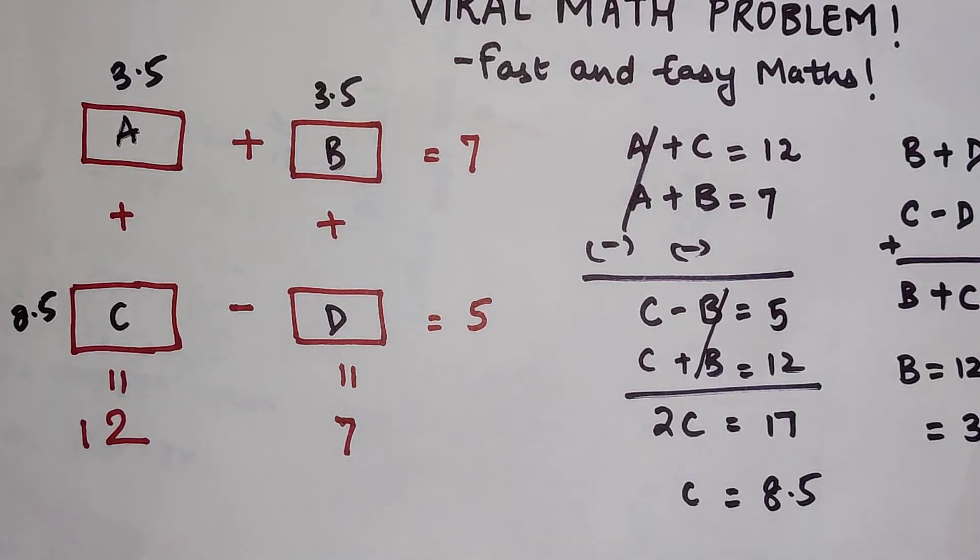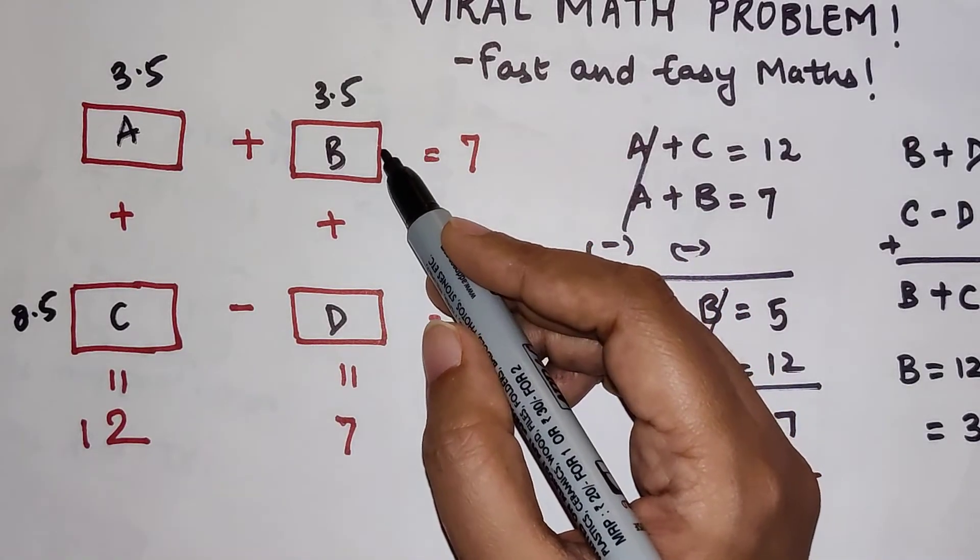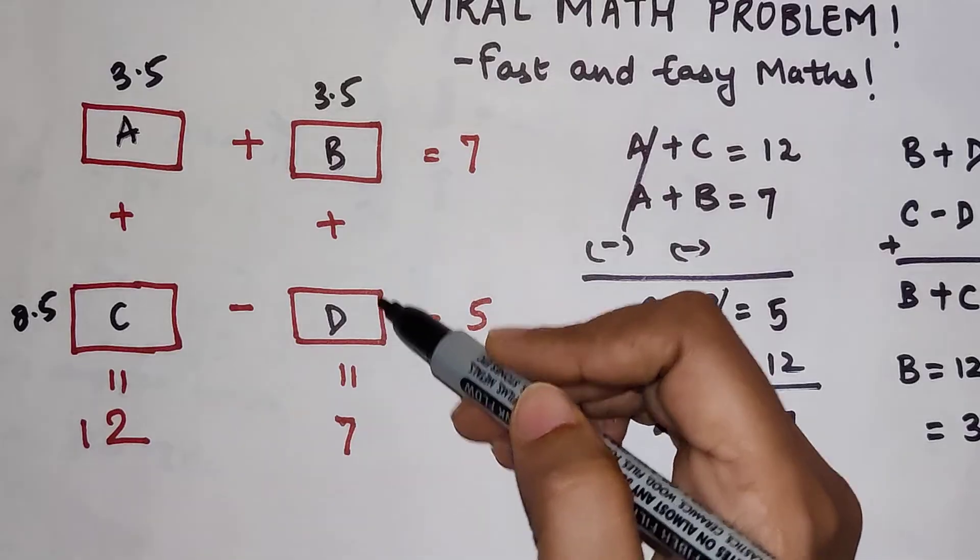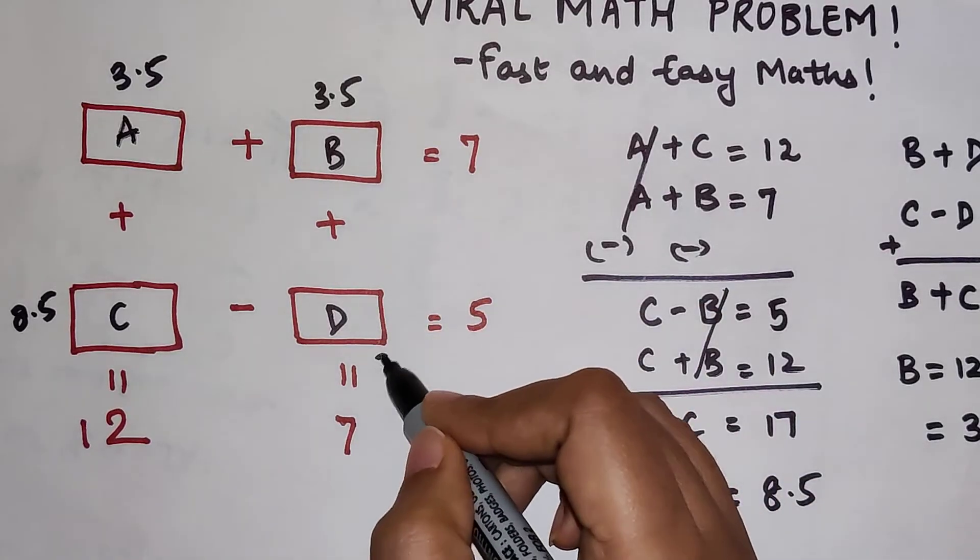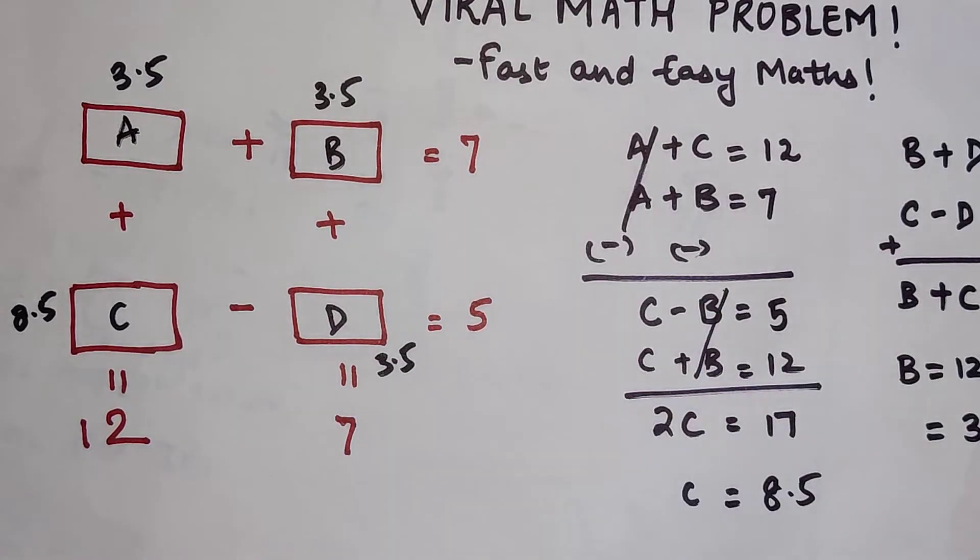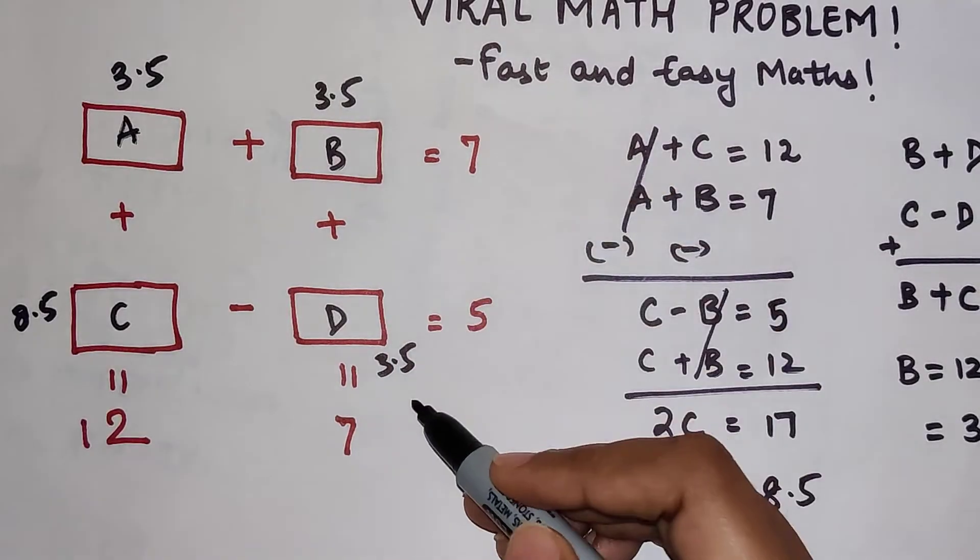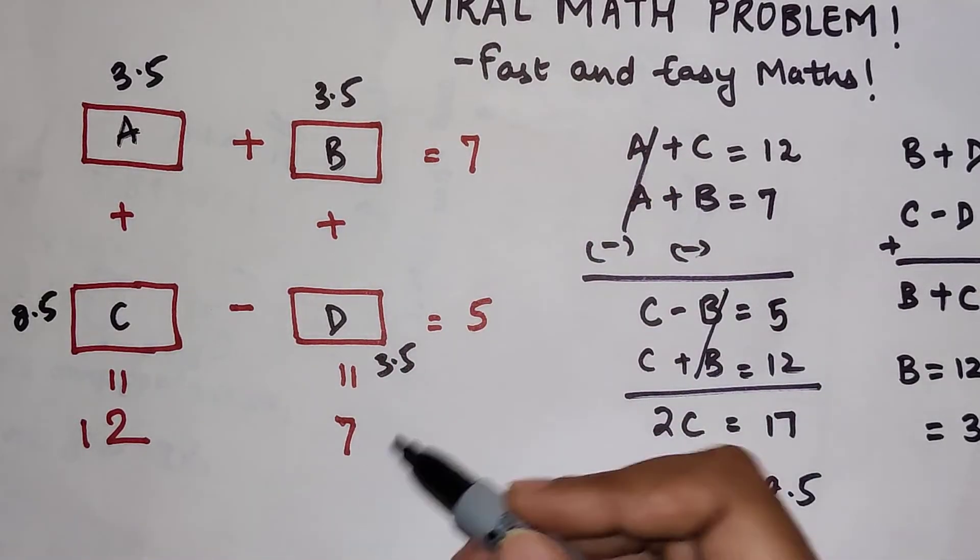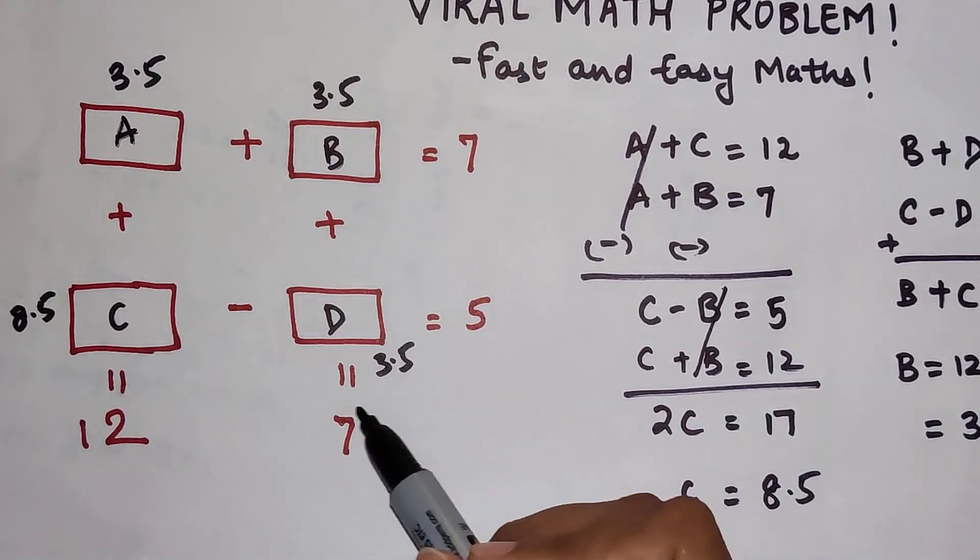So now you need the value of D, which equals 7. So this will also be 3.5 because 3.5 plus 3.5 will get me 7. And to cross-check, 8.5 minus 3.5 gets you 5.